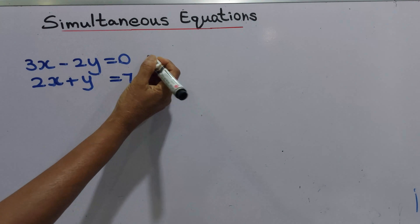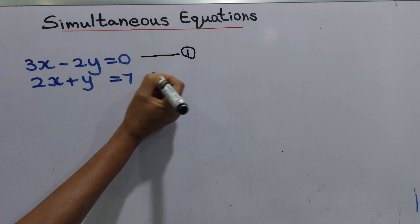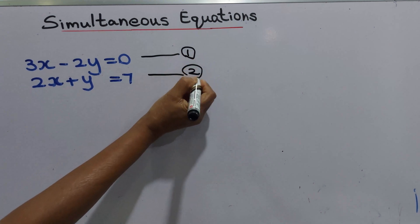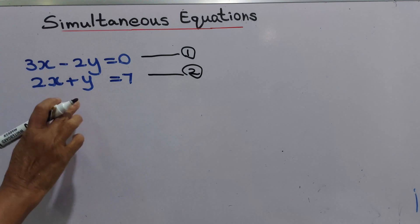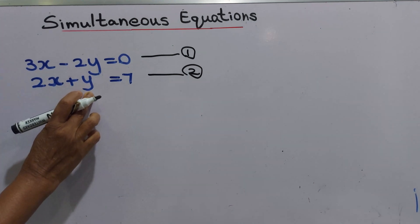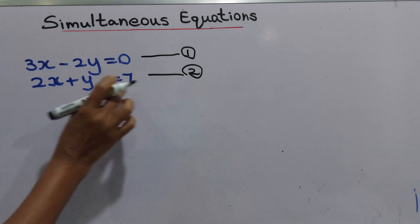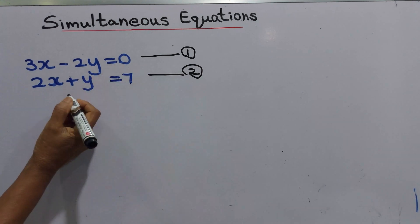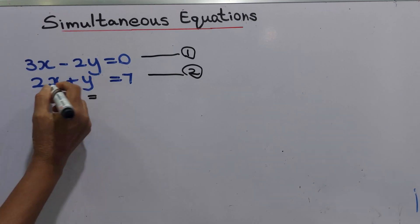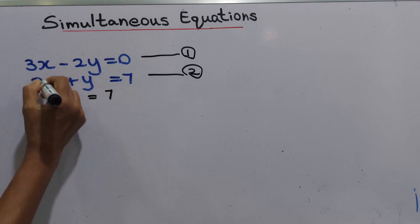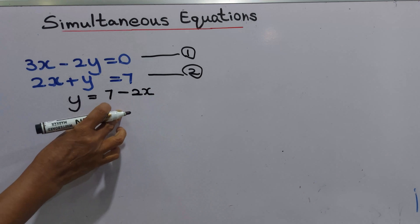The first step is to label the equations so that the working is made clear — this is equation 1, this is equation 2. The second step is to write y in terms of x from equation 2, which gives us y equals 7 minus 2x.